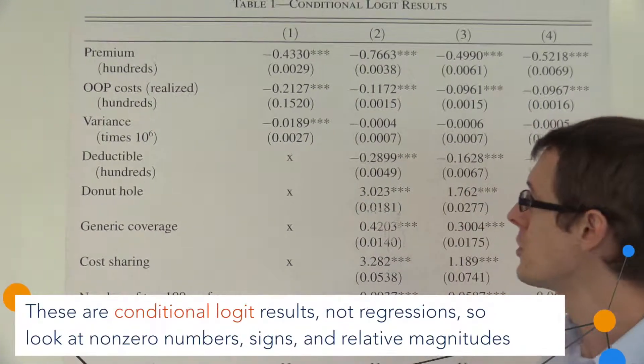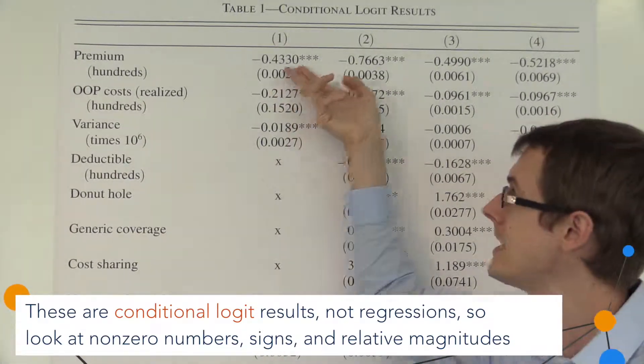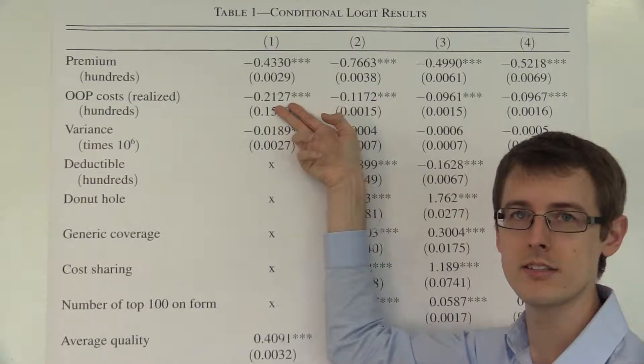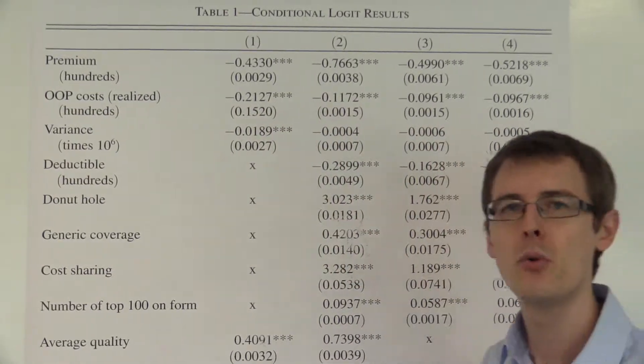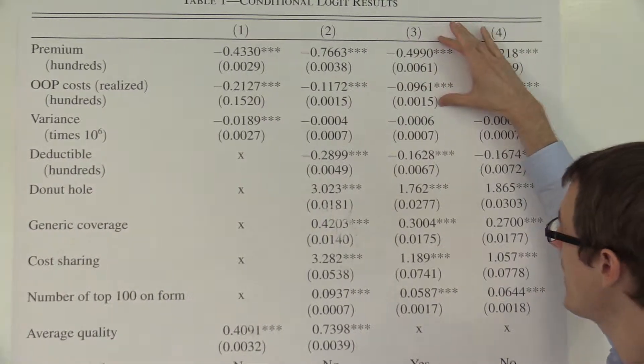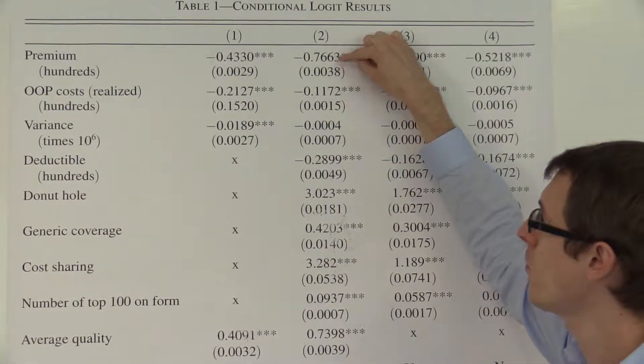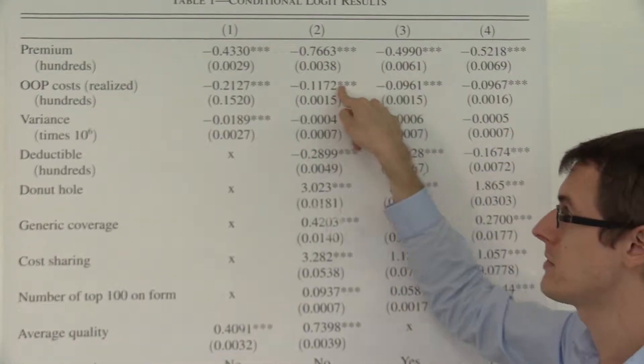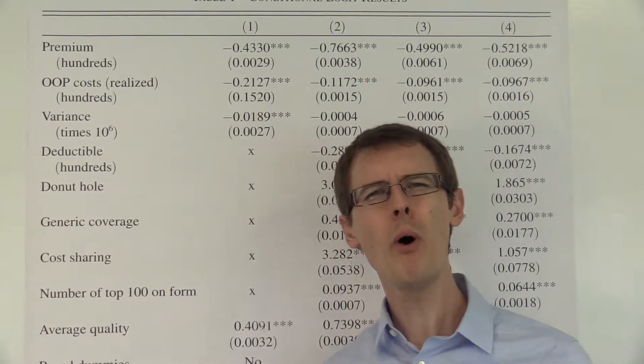Well, the first result is what I just showed. It seems that people dislike premiums twice as much as out-of-pocket costs. And if you go to the other columns, which are just different robustness checks, we see that that relationship is still true. People really don't like premiums, especially compared to out-of-pocket costs. Well, why is that weird?